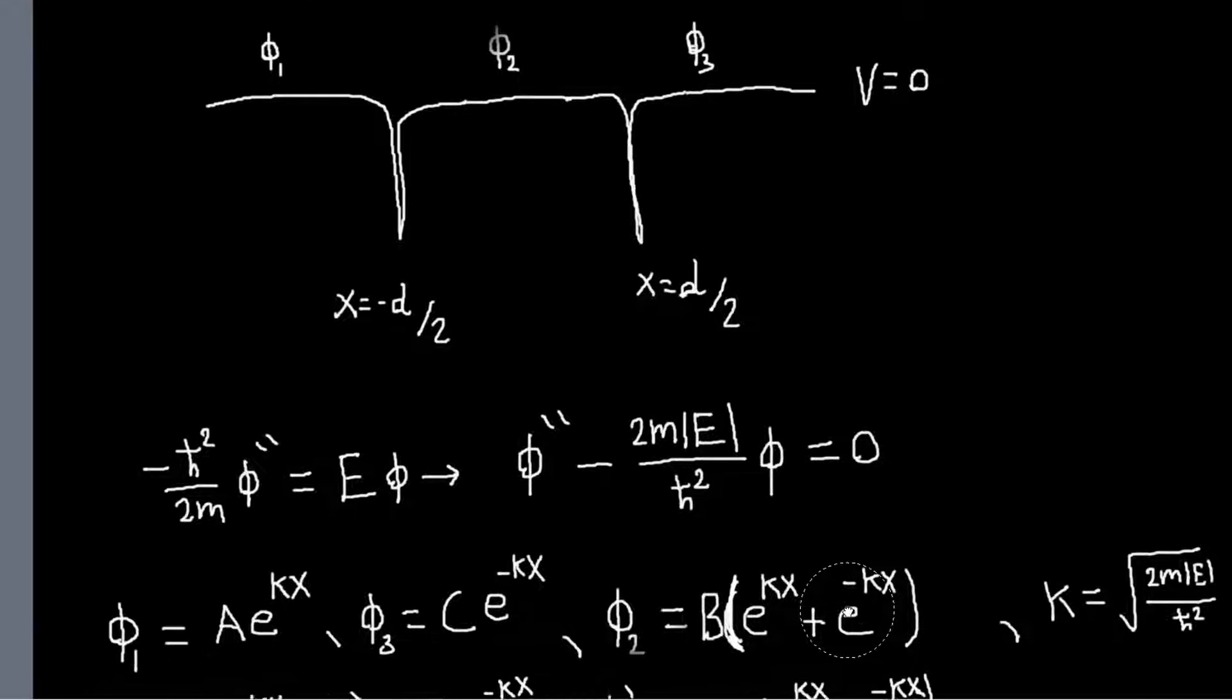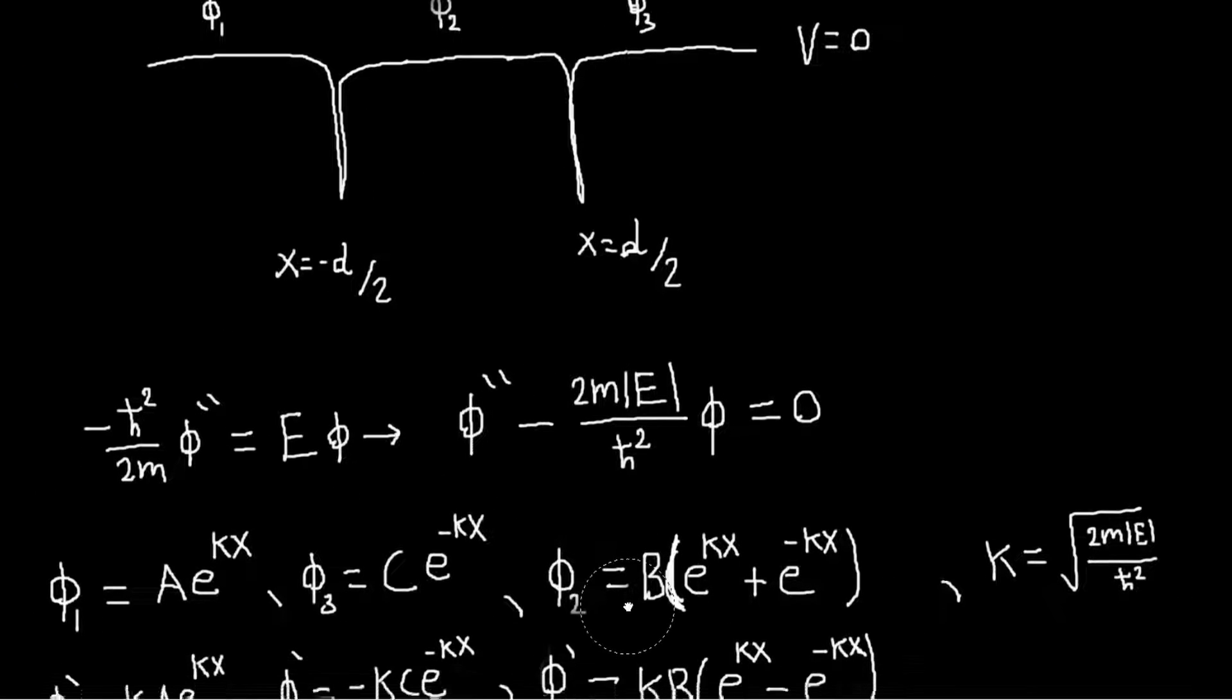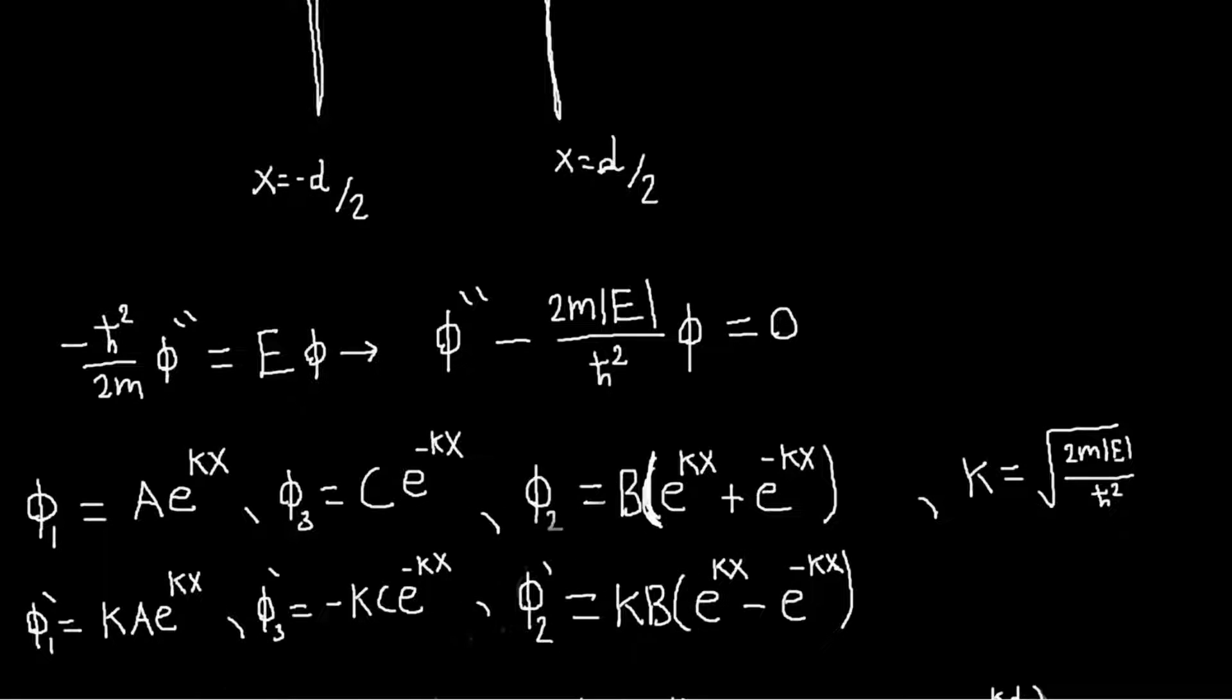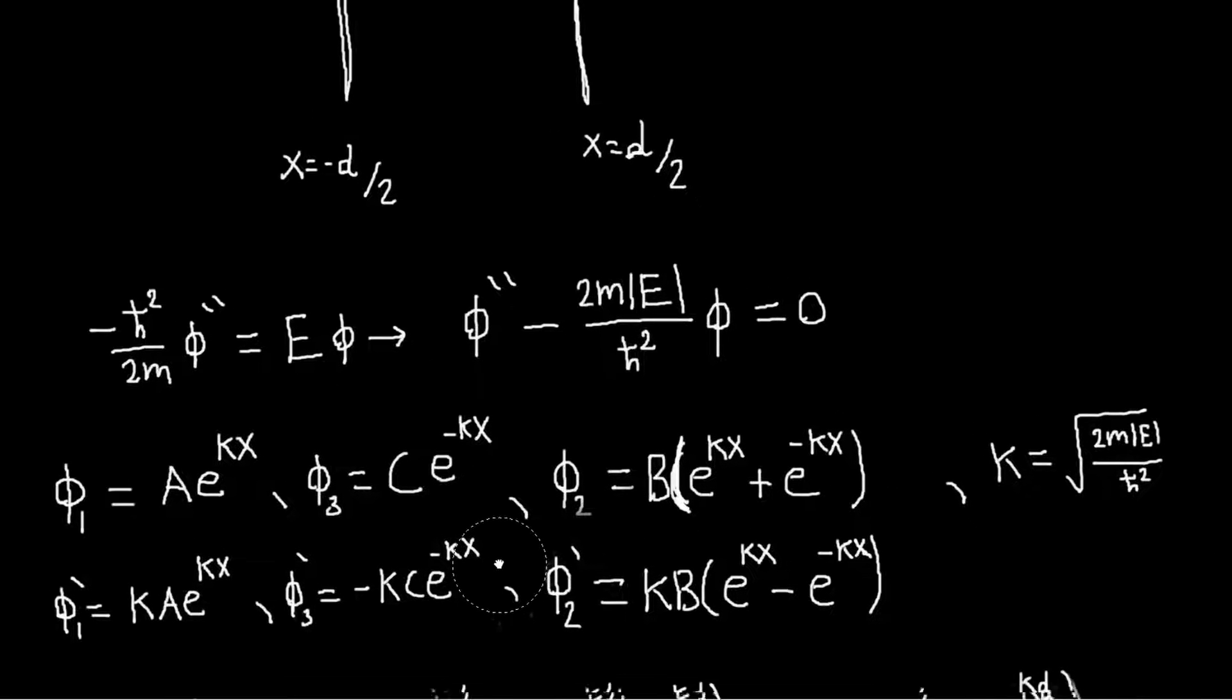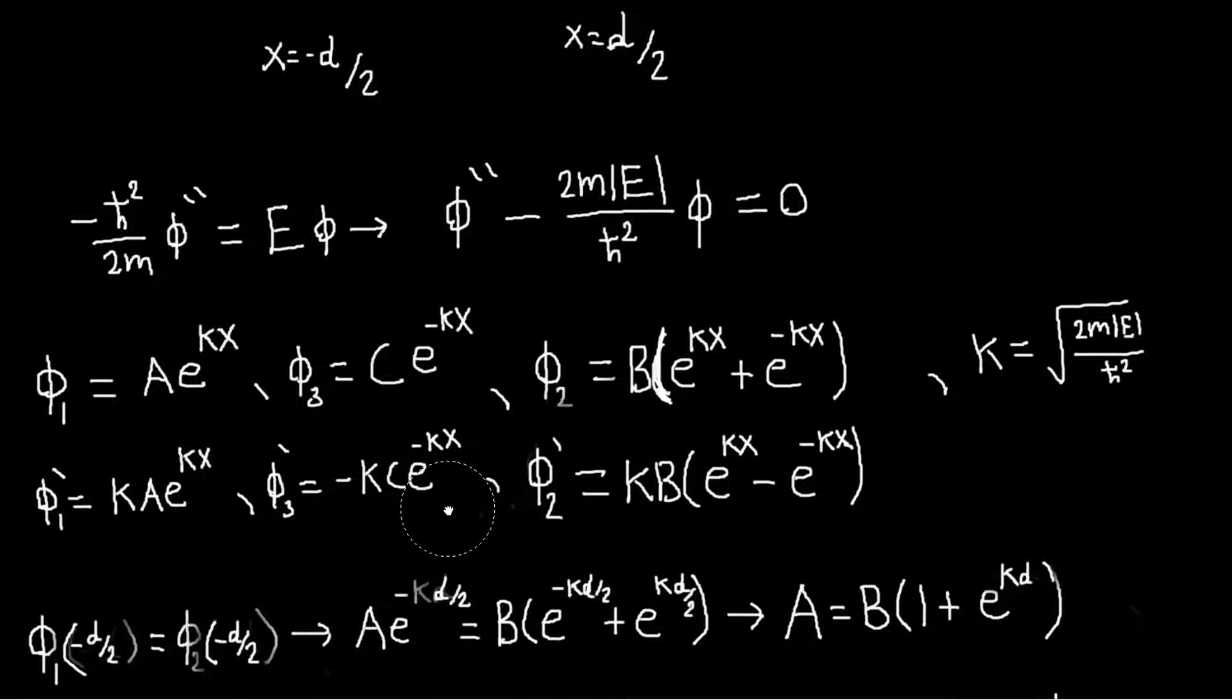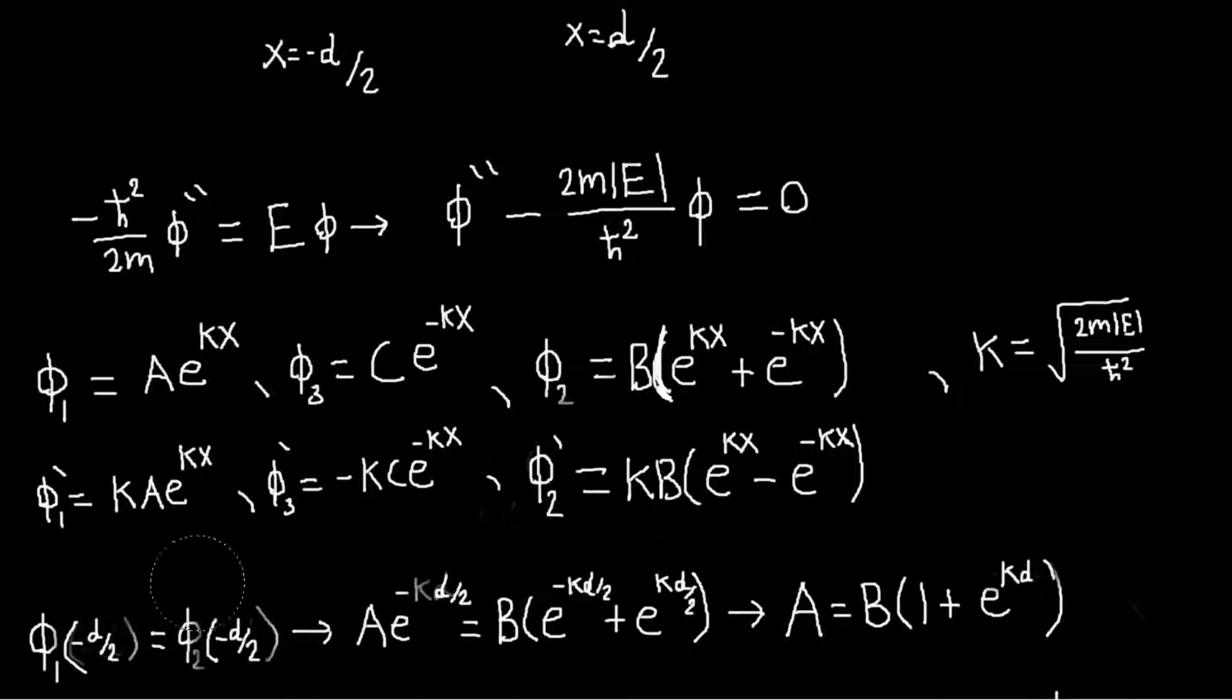From here, we'll just need the derivatives of each of these things so we can apply our boundary conditions. And then we'll just start doing that. So our first boundary condition is that the wave function should be continuous across our wells. So phi 1 at minus d over 2 should equal phi 2 of minus d over 2. And this will just relate a to b.